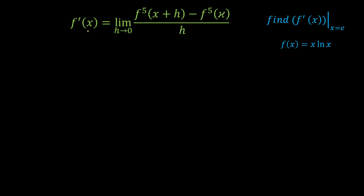In this question, f' is redefined as the limit as h tends to 0 of [f(x+h)]^5 minus [f(x)]^5, divided by h. Our objective is to calculate the derivative of f(x) = x·ln(x) using this definition, and they are asking for f'(x) at Napier's constant, that is at x = e.